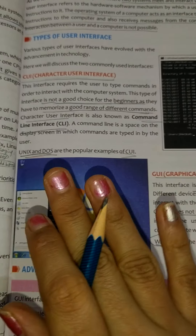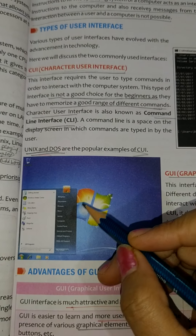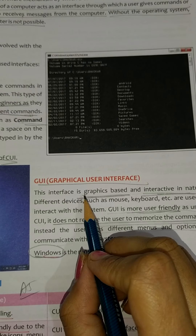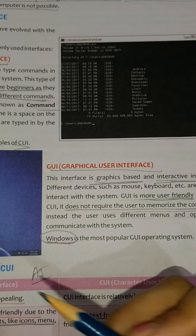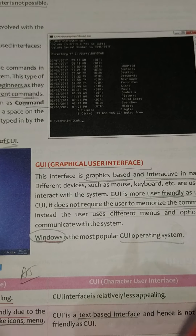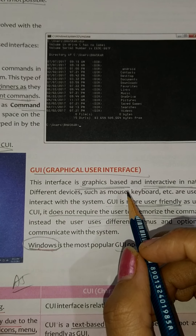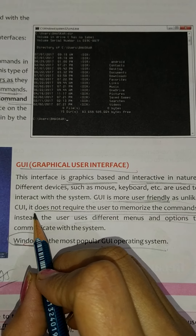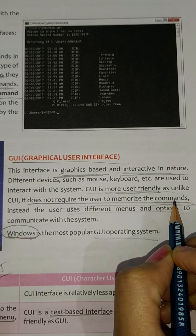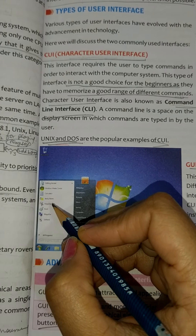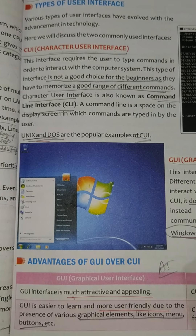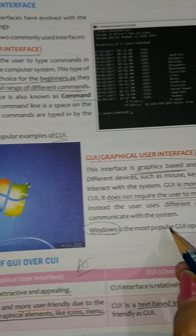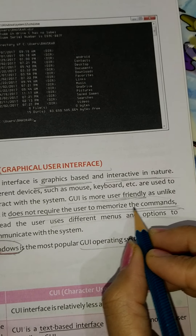Next is GUI. This you have seen — you are familiar with this type of window where icons are there and colorful windows are there. So graphic-based and interactive in nature, that is GUI. This interface is actually Windows. All versions of Windows are GUI operating systems. Linux is also like this — it is also a graphical user interface. This is more user friendly compared to CUI. It does not require the user to memorize commands, because here we have icons. We can just double click on an icon to open that particular window. We don't have to learn any command.